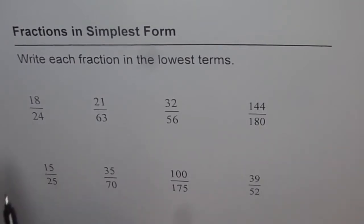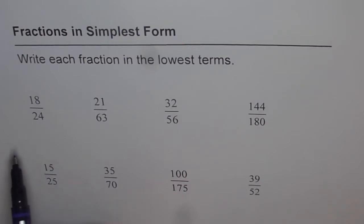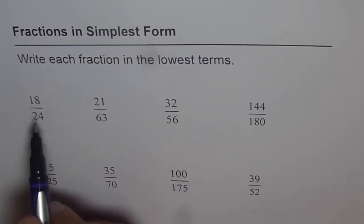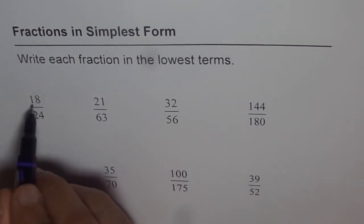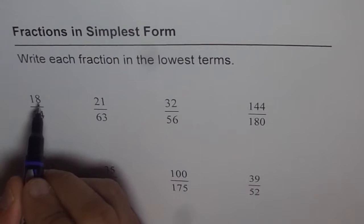So let's start with the very first one, which is 18 divided by 24. So the numerator 18 has got factors like, if I want to write 18, I could write this as 6 times 3 as 18.